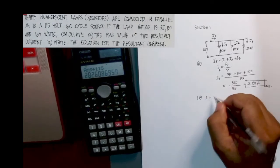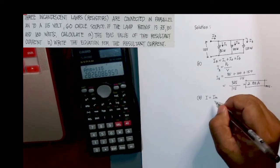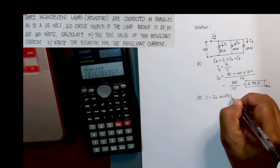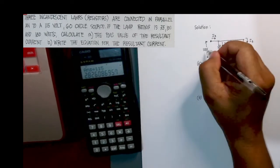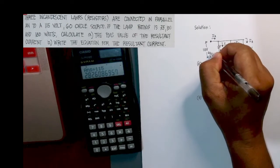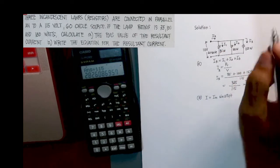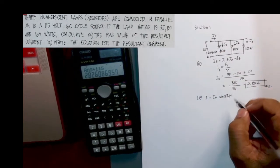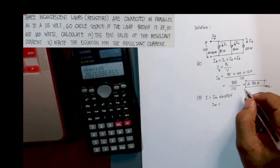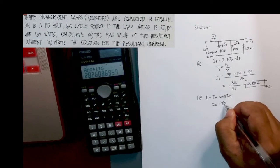For the resultant current, we know that the form of the equation is i equals the maximum current multiplied by sine 2π ft. So this 115 volt is actually also in 60 cycle per second.